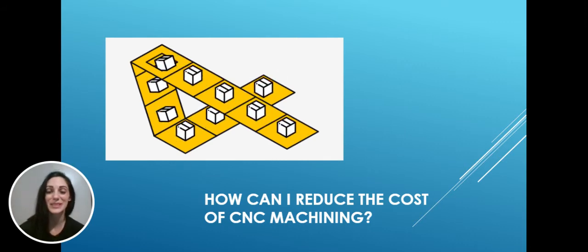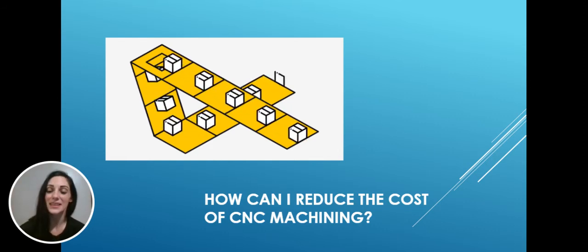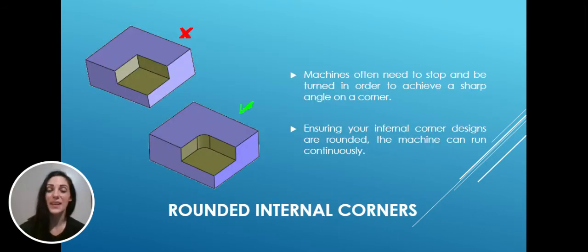So how can you reduce the cost of your CNC machining? Here at Haizol, we can provide you with several hints and tips to do this. The first one is to choose rounded internal corners. Machines often need to stop and be turned in order to achieve a sharp angle on the corner. Providing relief to corner pockets can avoid this and can reduce the time and steps it takes to produce your part. Ensuring your internal corner designs are rounded, the machine can run continuously to make your part, which can reduce the cost.